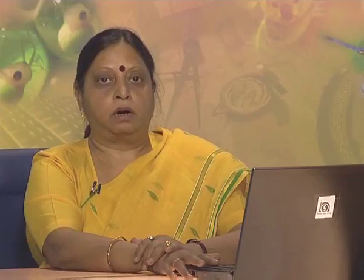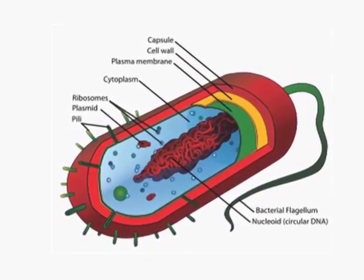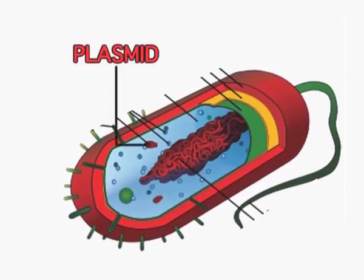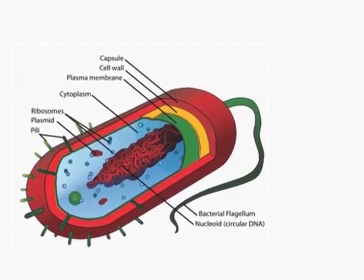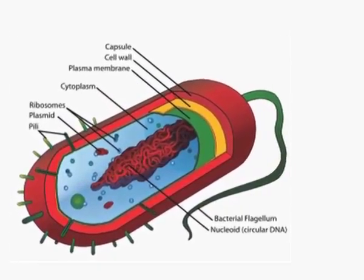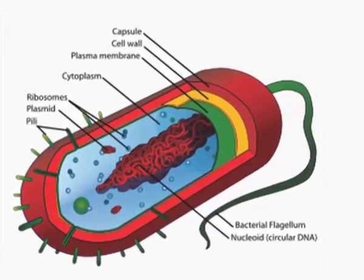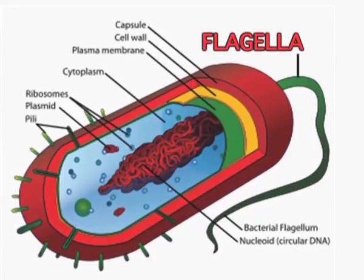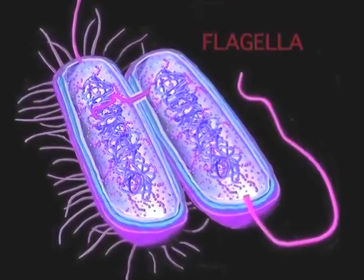The plasmid also reproduces along with the other DNA, and it contains genes for antibiotic resistance and other sex factors, making it beneficial for the bacteria that possess it. A long thread-like structure — much thicker than pili — is also present, known as flagella. These flagella allow the bacteria to move about freely. Cell organelles are absent in these prokaryotic organisms except for ribosomes, which are required for protein synthesis.